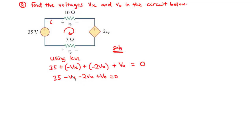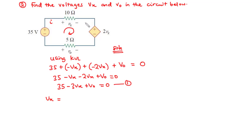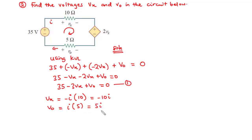Simplifying: 35 minus vx minus 2vx plus v0 equals zero, which becomes 35 minus 3vx plus v0 equals zero. Call this equation 1. Using Ohm's Law: for vx, current leaves the negative terminal through the 10-ohm resistor, so vx equals negative 10i. For v0, current leaves the positive terminal through the 5-ohm resistor, so v0 equals 5i.